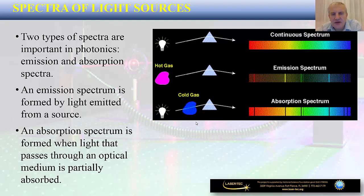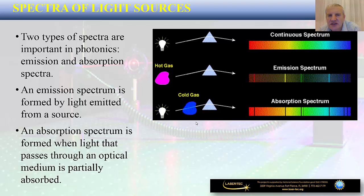This cold gas is the same type as the hot gas in the previous example. We can see an inverse relationship between the emission spectrum and the absorption spectrum of the same medium: the colors appearing as lines in the emission spectrum are exactly the colors missing in the absorption spectrum. In the emission case, electrons move from higher to lower energy levels, while in absorption, electrons move from lower to higher energy levels.